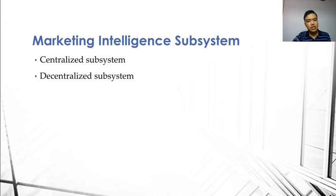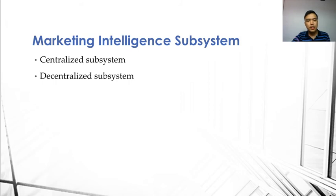When the subsystem is centralized, duplication of effort is minimized. In other words, it minimizes the chance of everyone buying a sample of the competitor's product or everyone attending the same product launching. With data centralized and available online throughout the organization, a more complete view of the overall situation can be achieved.